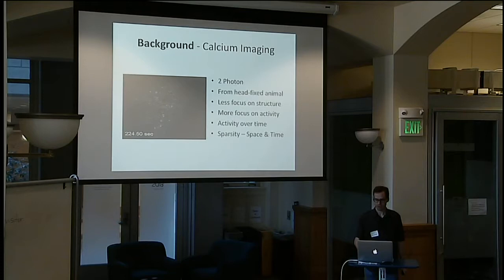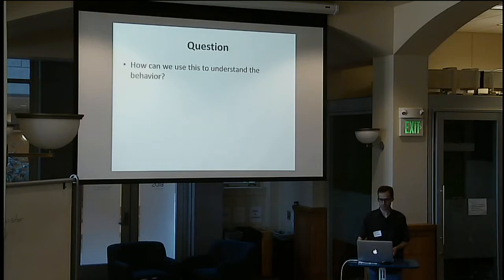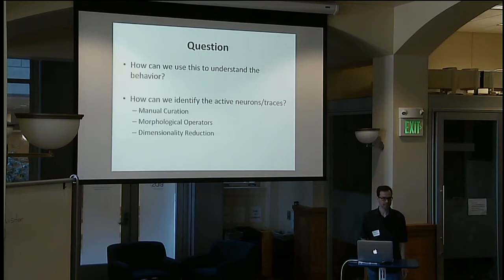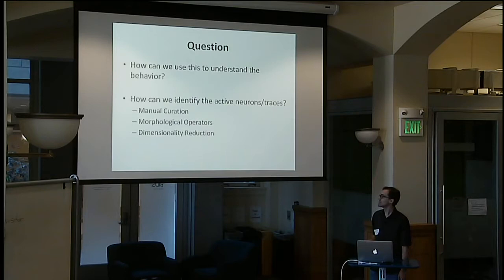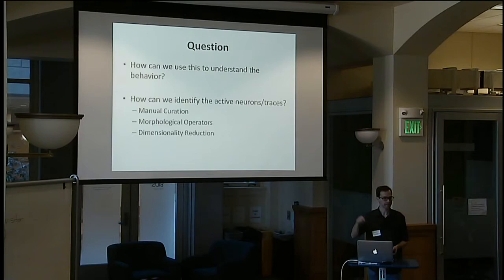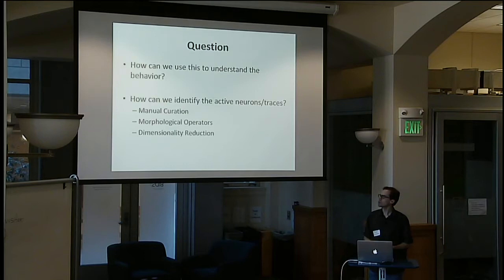The question is: how can we actually understand behavior from this data? What we want to do is identify active neurons and the traces they have. The naive solution is to just go through and select every neuron by hand — people do this to some extent, though not many. Normally they'll work on a projection, reducing data down to a standard deviation or mean projection, then drawing on it, and may add something semi-automated like a morphological operator where you click on the centers of cells. This is still really slow. Another more common approach now is dimensionality reduction — the data is too big, and we want to cut out background and noise and just retain neural activity over time.